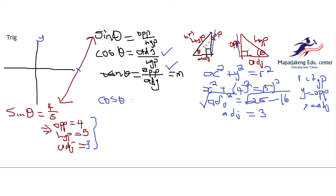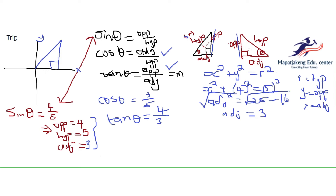From these three values you can find all trig ratios. Your cos theta will be adjacent over hypotenuse, which is 3 over 5. Your tan theta will be opposite over adjacent, which is 4 over 3. Drawing it on the Cartesian plane: your adjacent or x is 3, your y is 4, theta is the angle, and the side facing the 90 degrees — your hypotenuse or r — is 5.